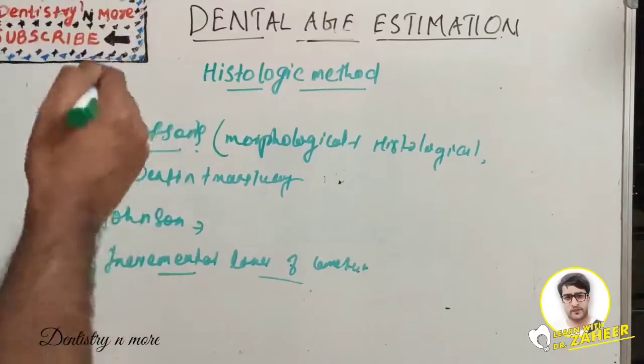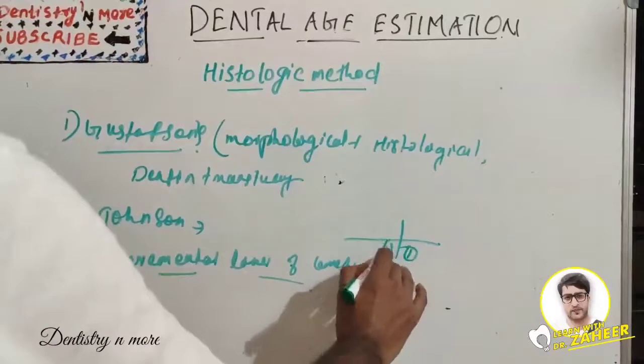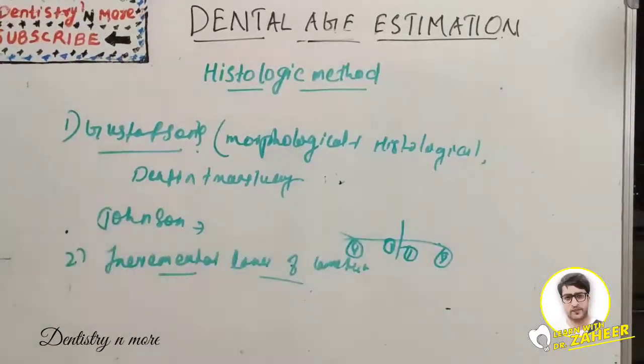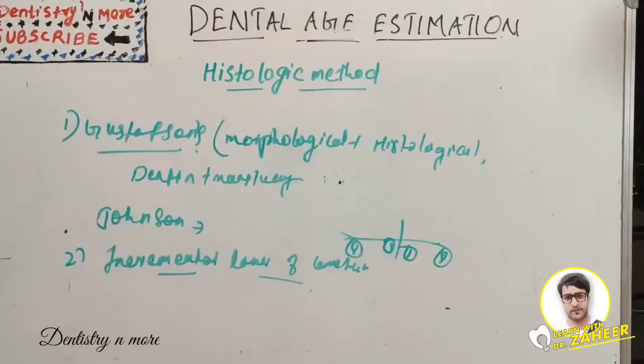Preferably mandibular central incisor and third molars are used for the mineralized unstained cross-sections.